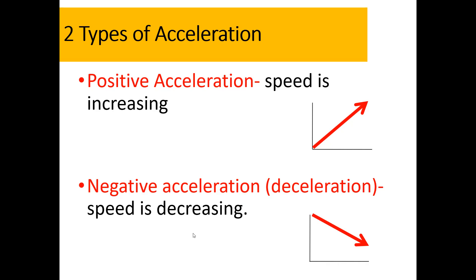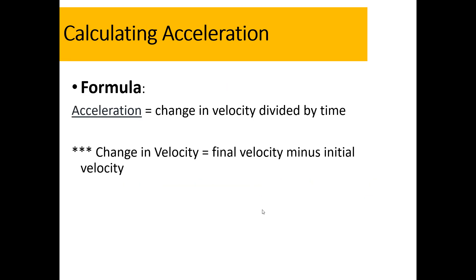On a graph, positive acceleration is going to be portrayed as a positive slope, and this shows us that speed is increasing. This would be on a velocity time graph. If we see a positive slope, then we have a positive acceleration. If we see a negative slope, that just means that our object is decelerating, which, again, is speed is decreasing.